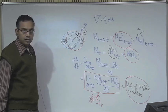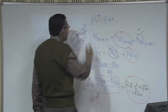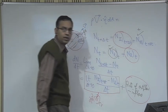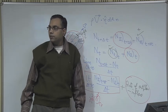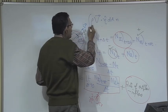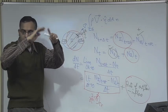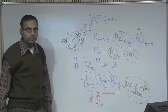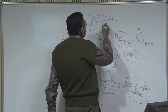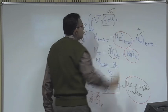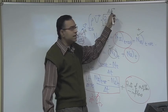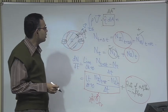So the outflow integral over the control surface is rho v dot dA times small n. For inflow, consider an area where the outward normal and the fluid velocity are in opposite directions. The dot product of v with eta is positive for outflow and negative for inflow, so the single expression — the integral of rho v dot dA times small n over the control surface — automatically handles both outflow and inflow without needing a separate minus sign.